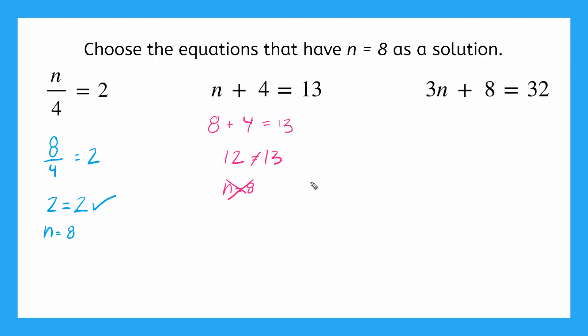Okay, last one says 3n plus 8 equals 32. n equals 8. I'm plugging that in here. So I'll have 3 times 8 plus 8 equals 32. I do my multiplication first. 3 times 8. That gives me 24 plus 8 equals 32.